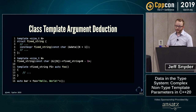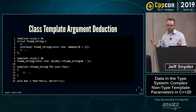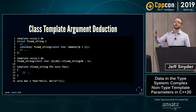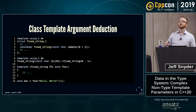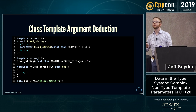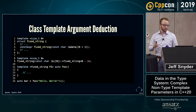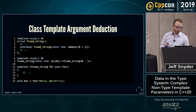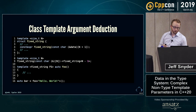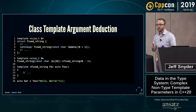Audience question about what the deduction guide does. It basically says that if you pass it an array of 14 characters, you instantiate a fixed_string of length 13 characters. This is part of the class template argument deduction feature — find me after if you'd like a full explanation.